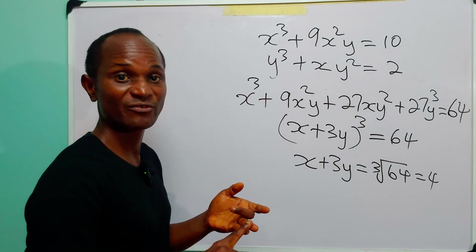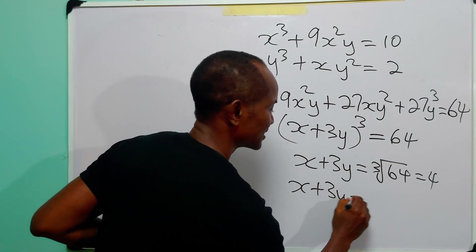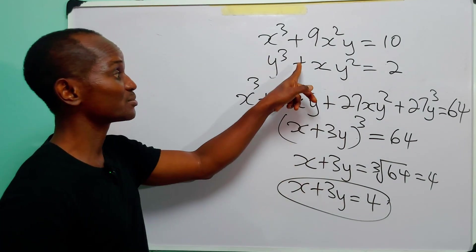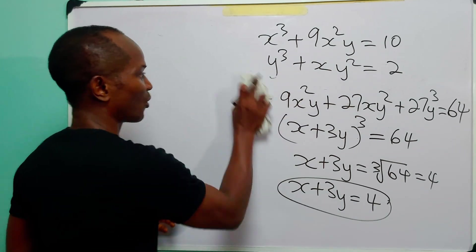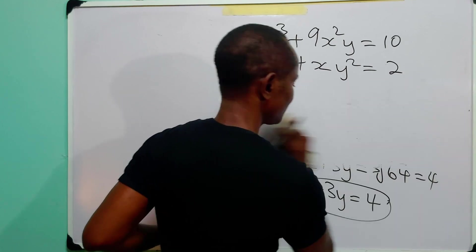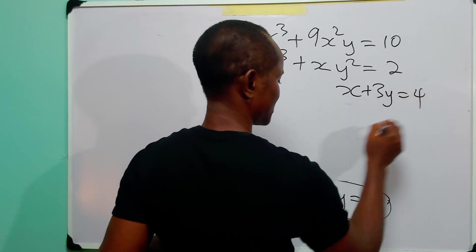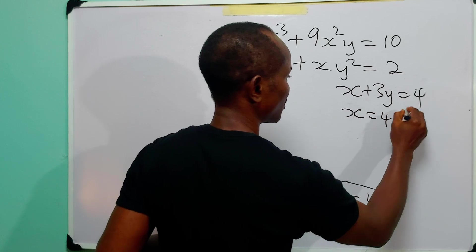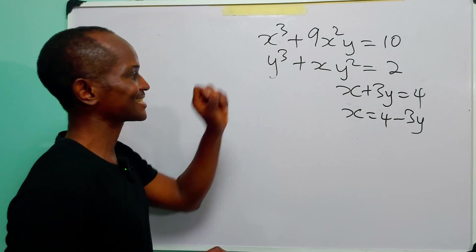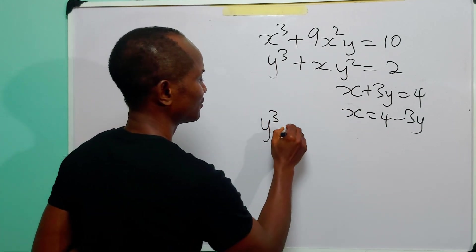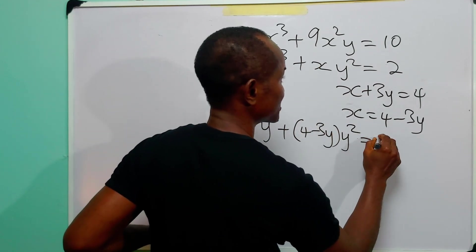Since x + 3y = 4, we have an equation we can substitute into one of the original equations. So x = 4 − 3y. Substituting into the second equation: y³ + (4 − 3y)·y² = 2.